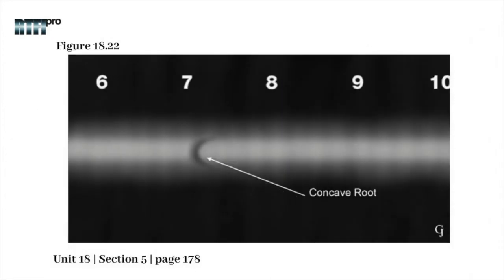Figure 18.22 provides a half-moon version of the concave root as the root concave in a small localized area. The half-moon concavity is very similar in some instances to the half-moon burn-through. However, the burn-through will typically have more width and is often accompanied with internal undercut.